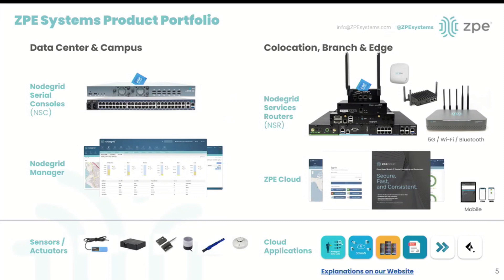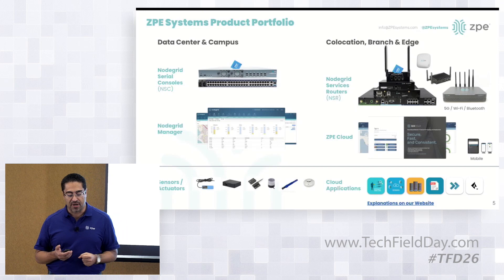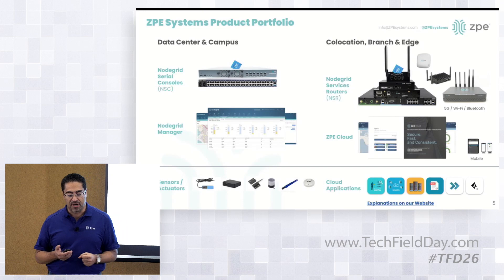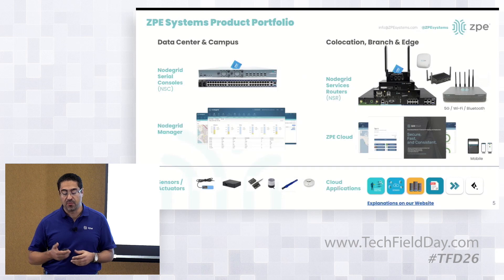There is a bunch of hardware, management systems, even environmental sensors, and cloud applications that ZPE produces to enable this automation infrastructure. For data center campuses, we have serial console switches and management systems. For the branch, edge, and colo, we have routers with various interfaces. I have some of this hardware here with me — cards and our modular device. This is a Nodegrid Bold SR.